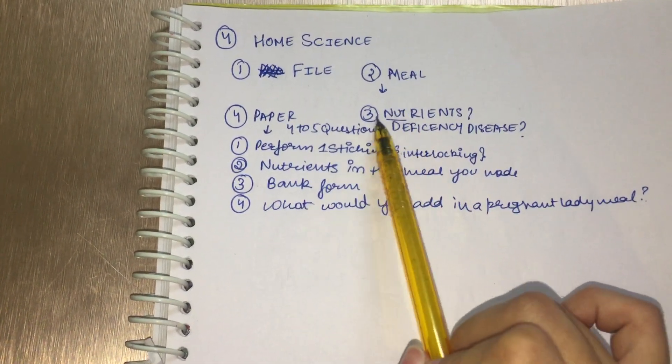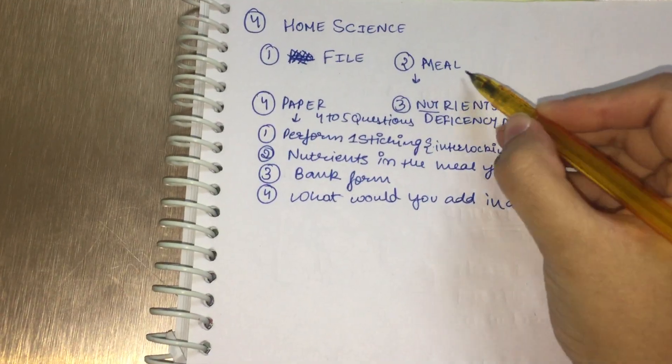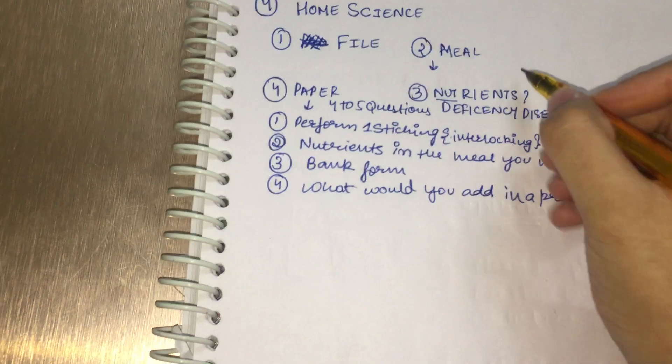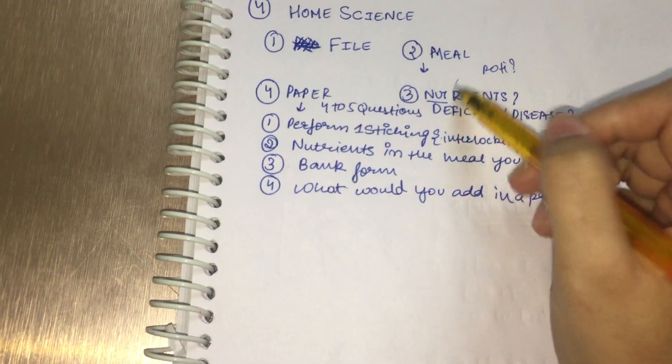Whatever meal you are making, you are going to be asked about the nutrients and deficiency diseases. For example, if you are making a roti, what are the nutrients in it?